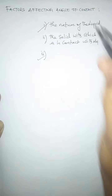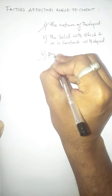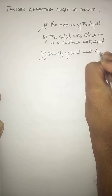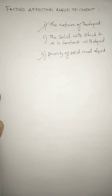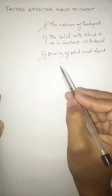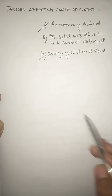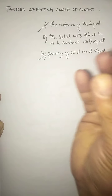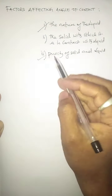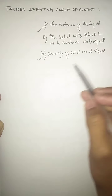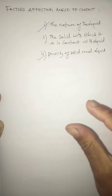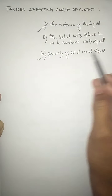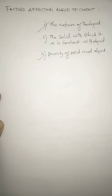The third factor is the purity of the solid and liquid. Purity of solid means how clean the solid is, and purity of liquid means how pure the liquid is. For example, the angle of contact between ordinary water and glass is approximately 8°, but if you take pure water and a clean glass plate, the angle of contact becomes 0°. So purity of both solid and liquid changes the angle of contact.